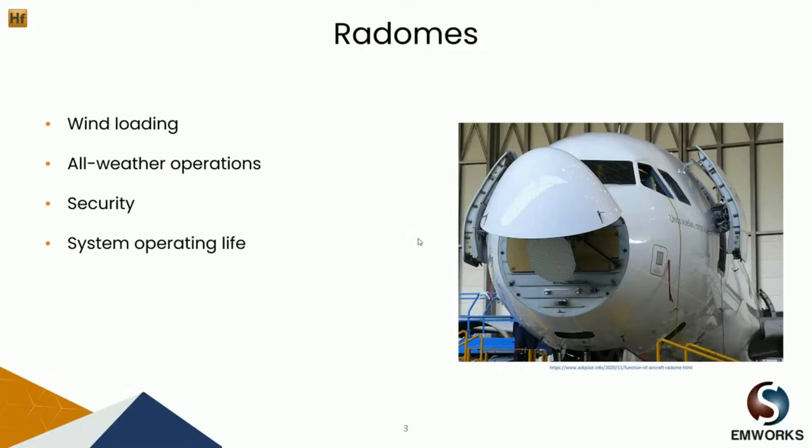On the right, we can see an image of a weather radar which is placed under an aircraft radome. Basically, the radome serves to protect the antenna from different environmental conditions.